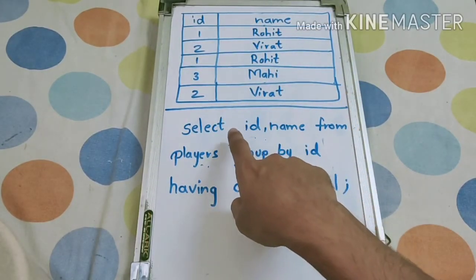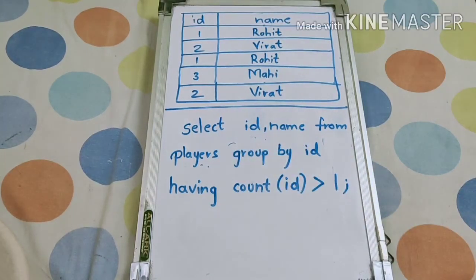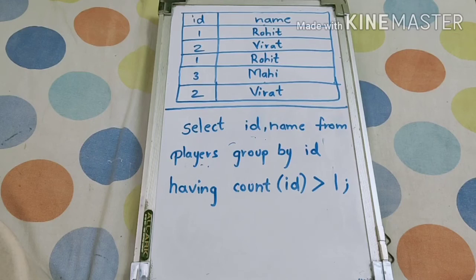The output will come as 1, Rohit and 2, Virat. So using this query you can find duplicate records in a table. If you haven't watched our previous SQL interview question video, we're creating a playlist you can find linked here. Subscribe for more videos and let me know if you want any specific SQL interview question video. Thank you, and maintain social distancing.